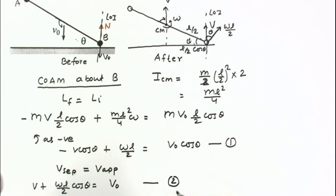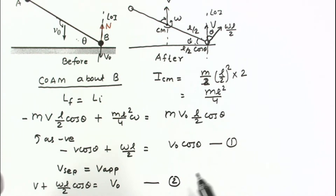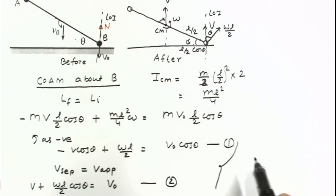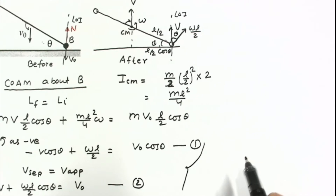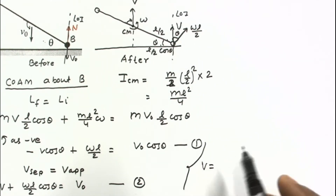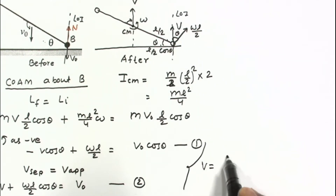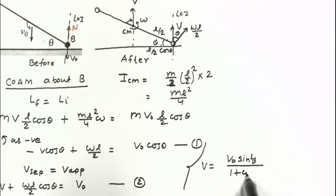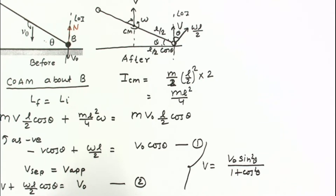Solving these two equations simultaneously, the velocity of the center of mass after the collision is: v = v₀·sin²θ / (1 + cos²θ).